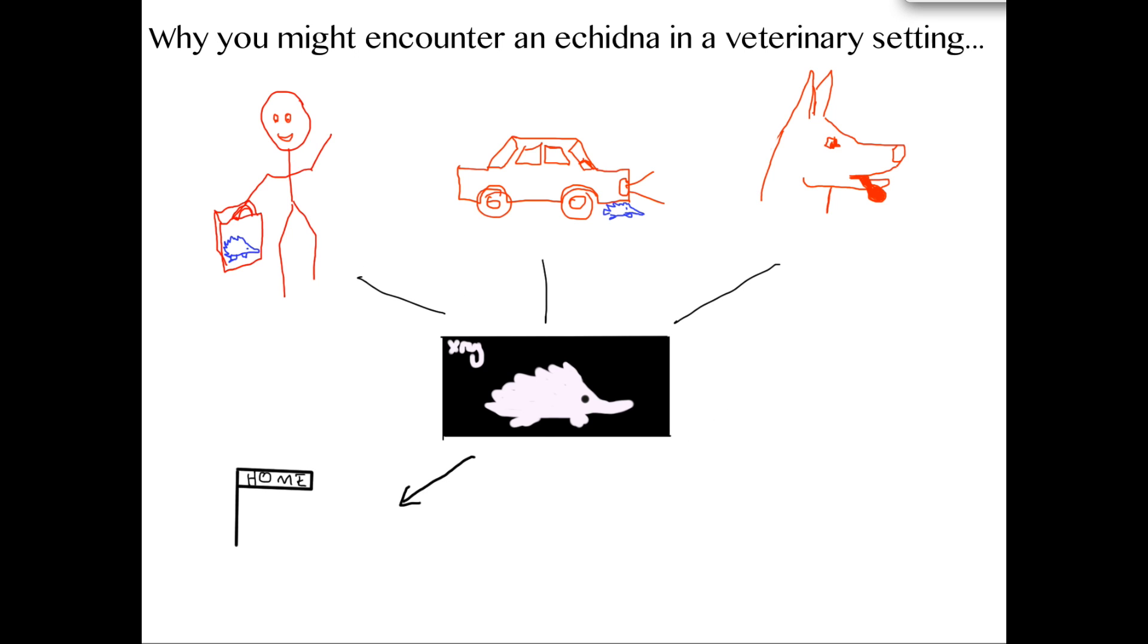However, a common traumatic injury vets encounter is a fractured beak. Unfortunately, the swelling and any hemorrhage often compresses the delicate nerve organs and pathways in the beak, causing the animal to lose its ability to detect prey. Sadly, this would result in the echidna starving to death over a prolonged period, and often the kindest outcome is euthanasia.